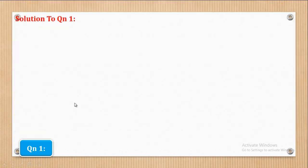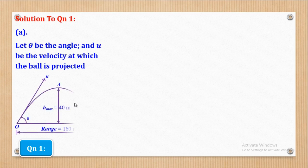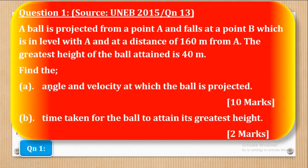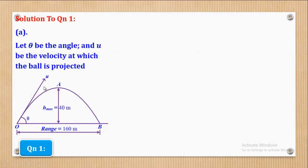Such questions are easily done by making a sketch. Before we make a sketch, we shall first let theta be the angle and U be the velocity at which the ball is projected. The sketch shows the maximum height of 40 meters and the range of 160 meters. The ball travels horizontally from O through A to B, with initial velocity U at angle theta. Part A asks for the values of theta and U.